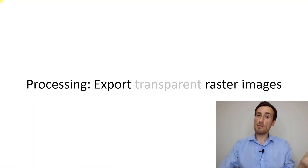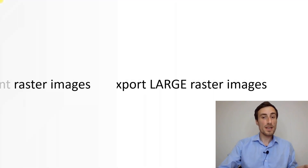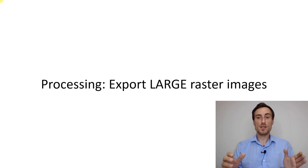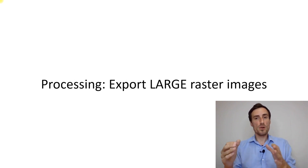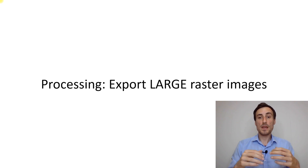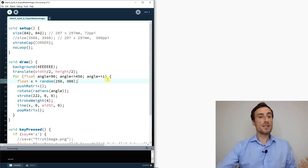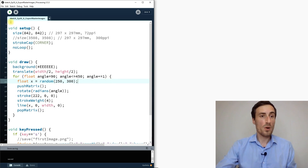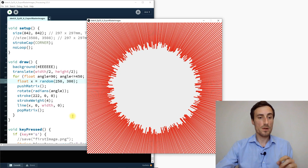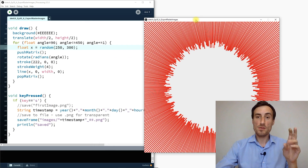In this video we continue where we stopped in the previous one. I will talk about exporting transparent raster images and also how to export large raster images that can be seen on your display and used for high quality prints. In the last video we stopped with this code — we learned how to export images with a timestamp, and we encountered two problems.